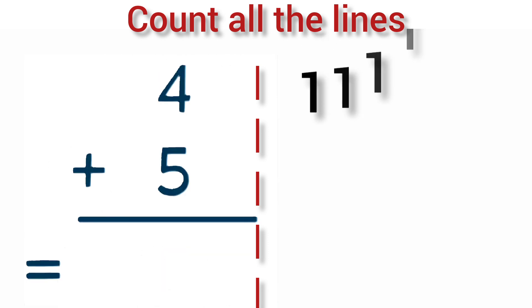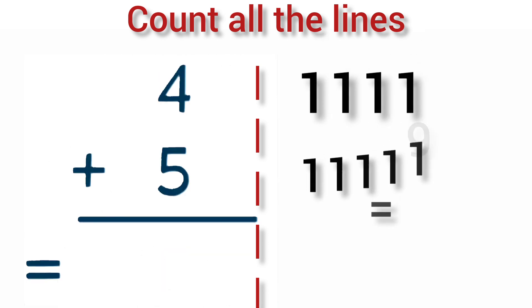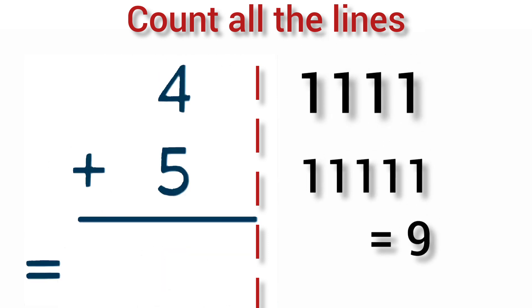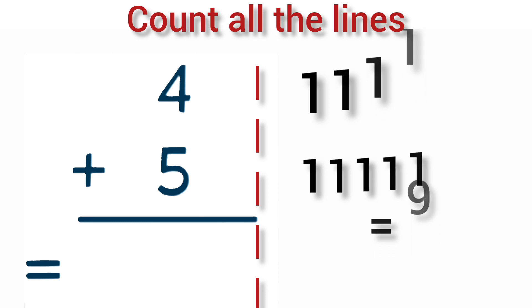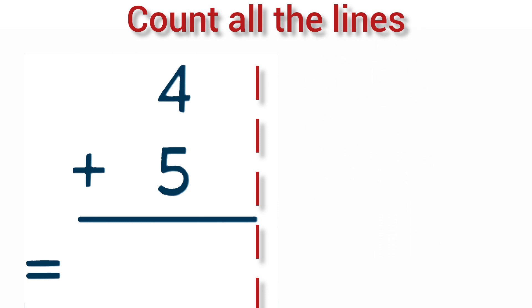Add 4 plus 5. 4 lines plus 5 lines is equal to 9. So, 4 plus 5 is equal to 9.